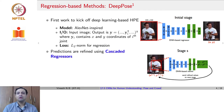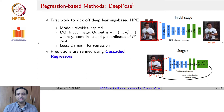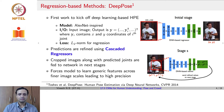DeepPose did not stop there. To further improve performance, it used cascaded regressors to improve the precision of joint localization. Once a joint position is identified in the initial stage, a region around it is cropped and scaled up to the CNN input size, which again predicts a refined value of the joint position inside that patch. These cropped images are fed into the network in subsequent stages, ensuring that across finer image scales, precise keypoint locations are obtained.